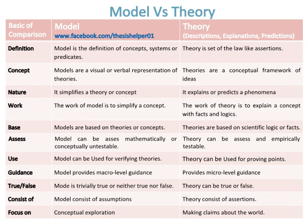The work of a model is to simplify a concept. Whereas, the work of theory is to explain a concept with facts and logic. Models are based on theories or concepts. Whereas, theories are based on scientific logic or facts.